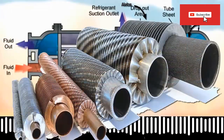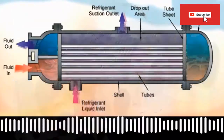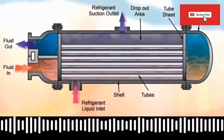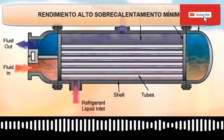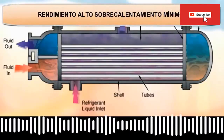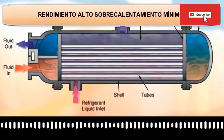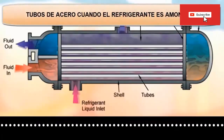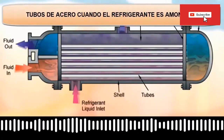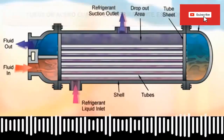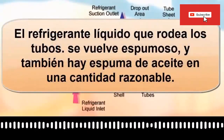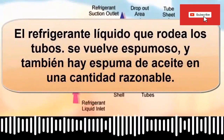10. This type of evaporator uses fins outside the tube when working with ammonia. 11. In evaporators that work with freons, the fins are used on the refrigerant side. 12. The performance of the refrigeration circuit with this type of evaporator is high because practically zero superheating is guaranteed. 13. Steel tubes are used in evaporators that work with ammonia, while copper tubes are used with freons. 14. The liquid refrigerant that surrounds the tubes becomes foamy, and there is also oil foam in a reasonable amount.